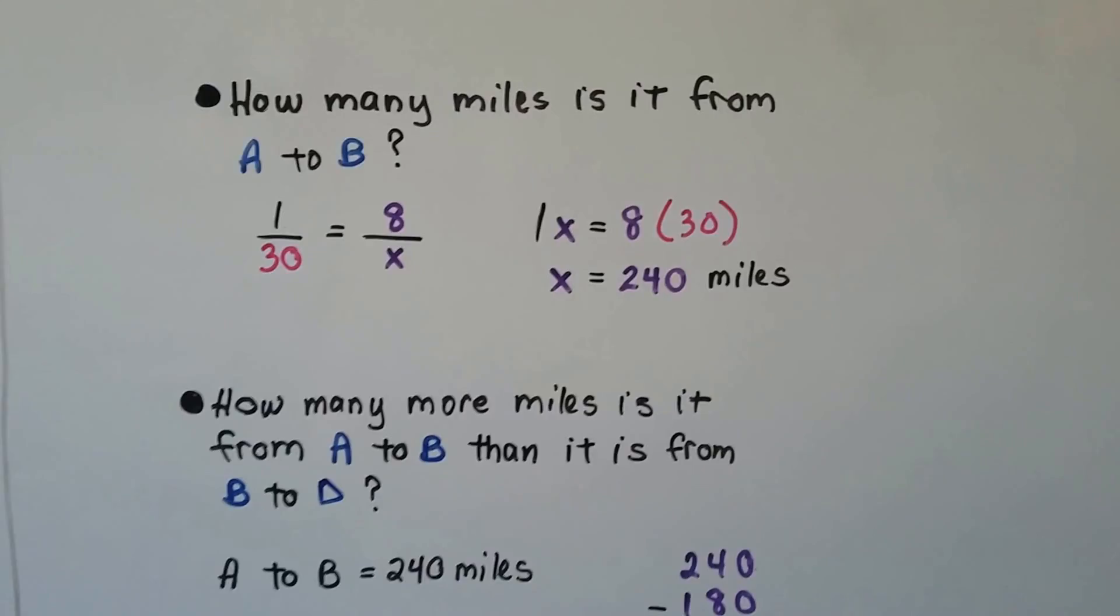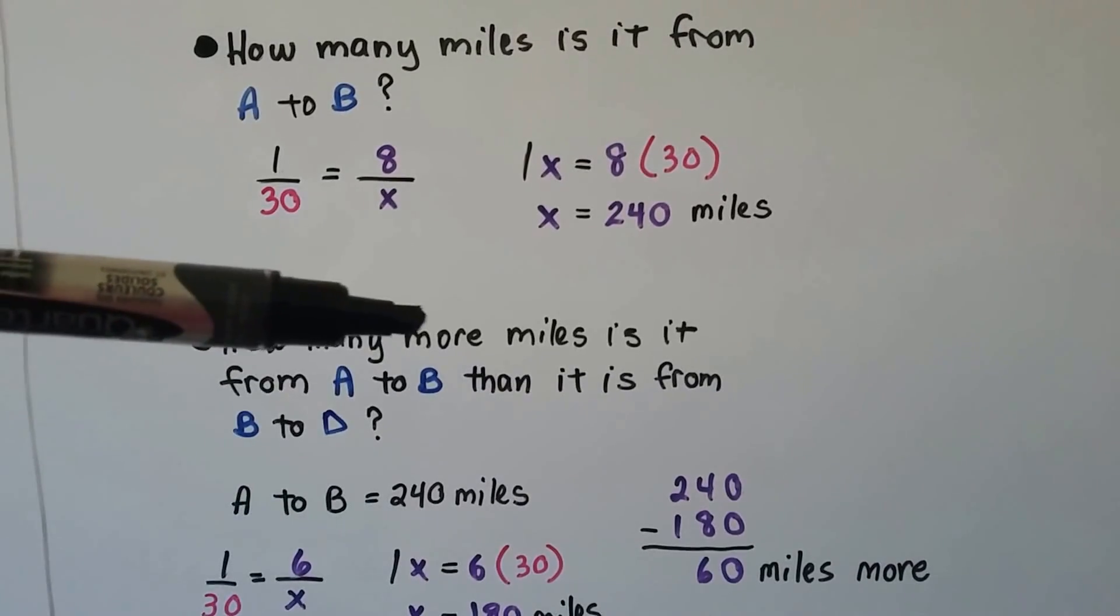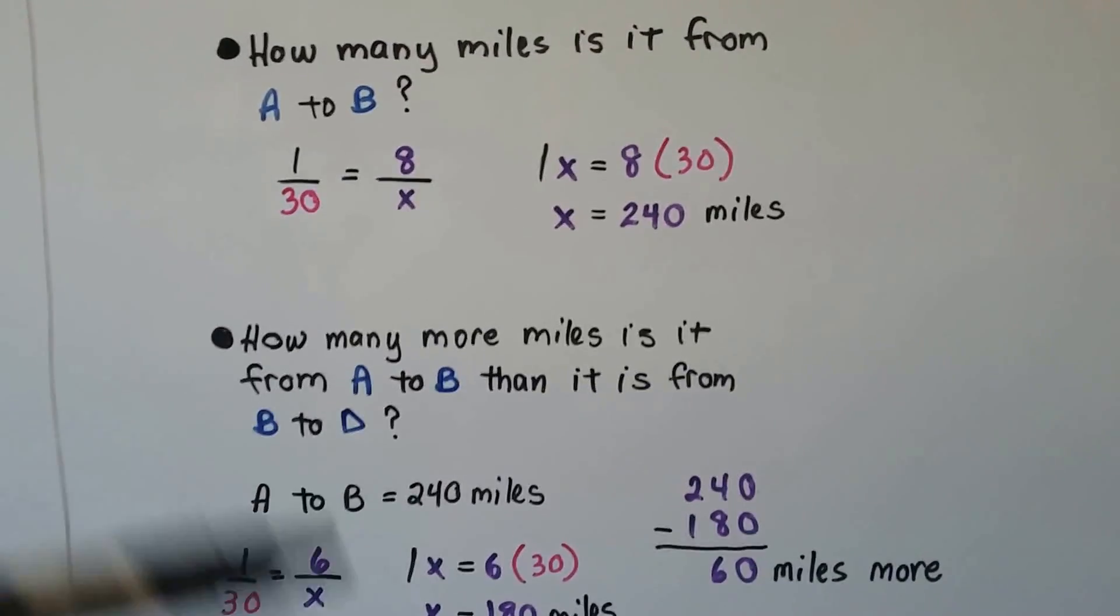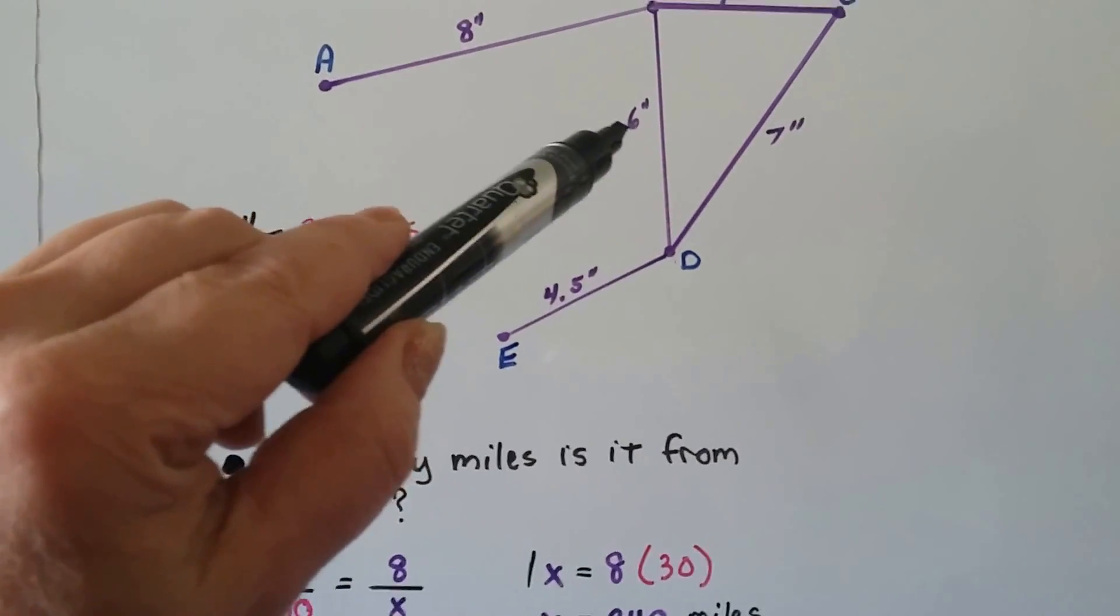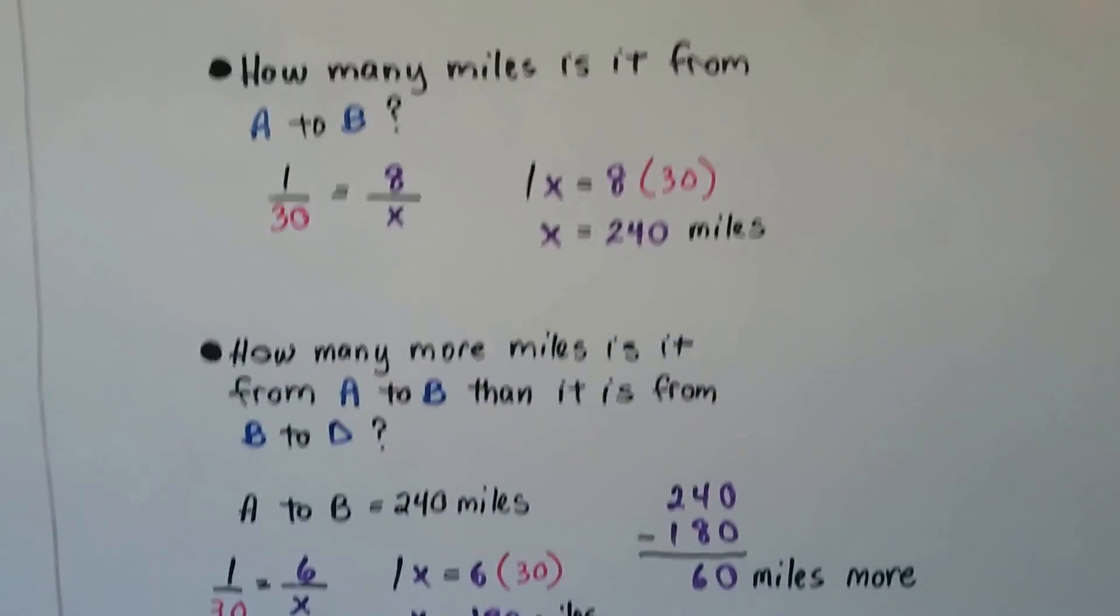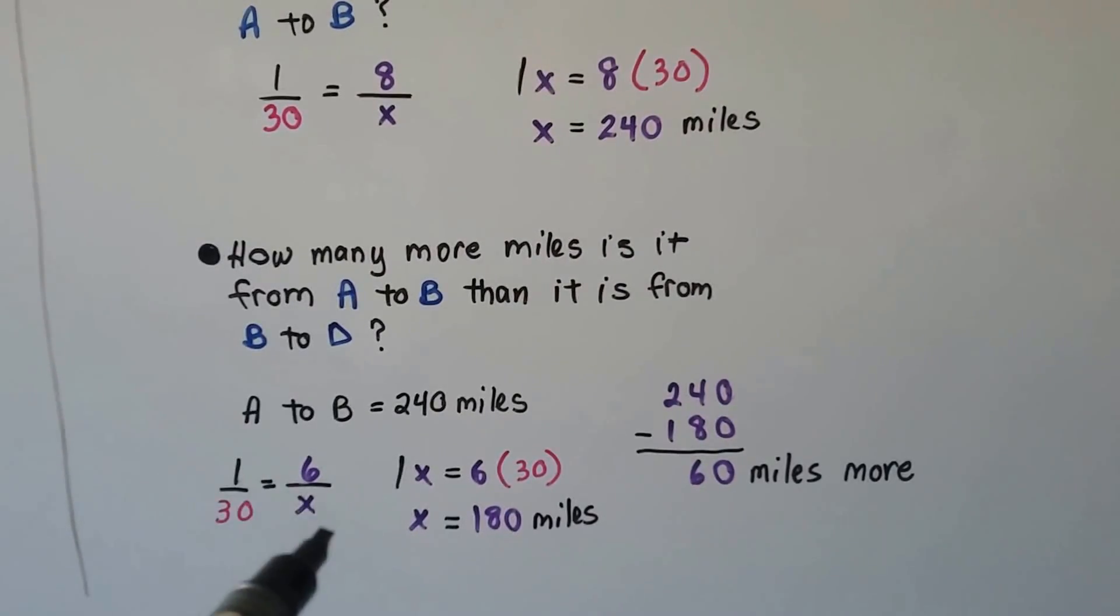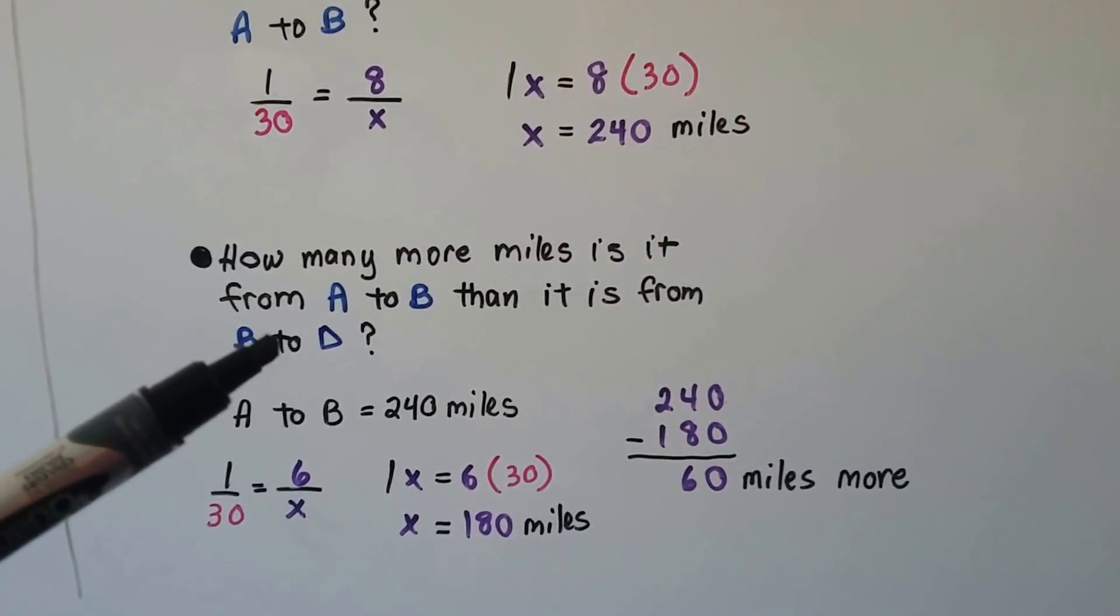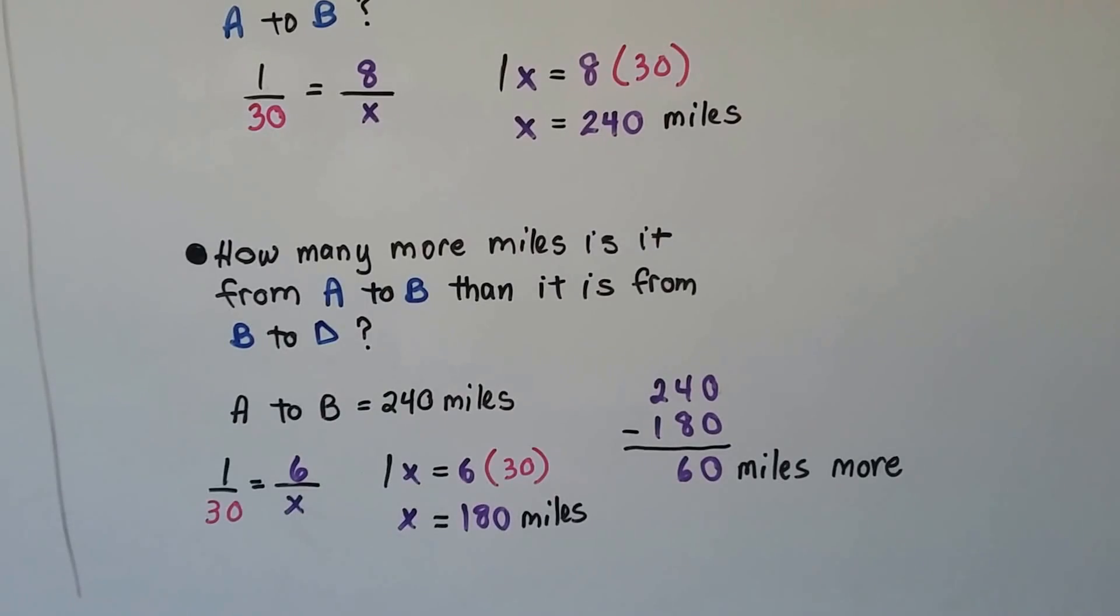How many more miles is it from A to B than it is from B to D? So, in this one, it's a couple of steps. We need to find the actual mileage of A to B, and then the actual mileage of B to D, and then subtract to find how many more the one is from the other. So, we already did A to B. That's two hundred and forty. From B to D is six inches. Because it's a unit rate, we could quickly just say six times thirty is one eighty. But, as a proportion, we use our one thirtieth. And, it's going to equal the six inches over x. We have one x equals six times thirty. So, it's one hundred and eighty miles. How many more miles is it from A to B than it is from B to D? Well, that's two hundred and forty. That's one hundred and eighty. We subtract and find out that that one's sixty miles more.